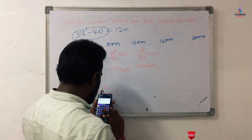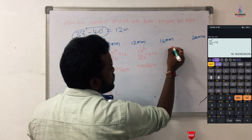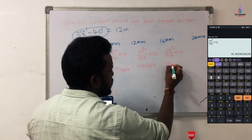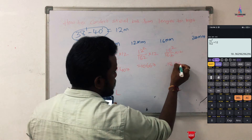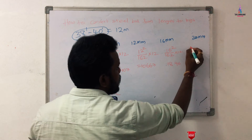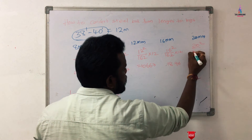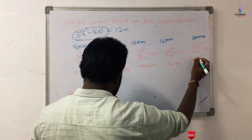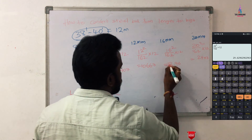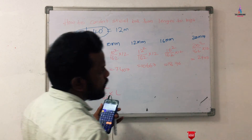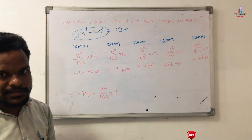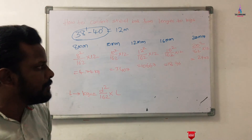For a 16 mm diameter bar: 16² ÷ 162 × 12, which gives approximately 18.96 kg. For a 20 mm diameter bar: 20² ÷ 162 × 12, which is approximately equal to 29.63 kg. Using the same process, you can calculate the values for 24 mm, 30 mm, and 36 mm diameter bars for your construction project.